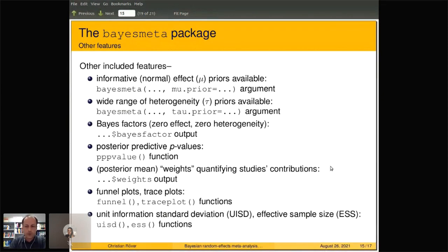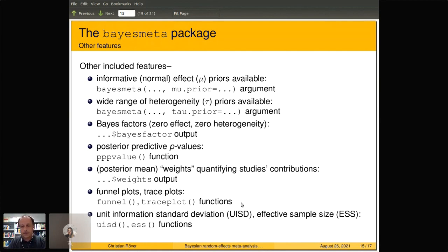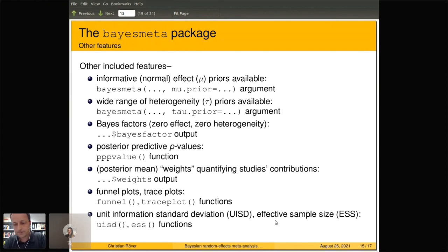It's often useful to quantify the influence individual estimates have on the overall outcome by giving weights to quantify the contribution of individual studies — that's included in the output. You can also produce additional plots like funnel plots or trace plots showing the behavior of the conditional mean and standard deviation of individual studies as you vary the heterogeneity. There are additional functions to figure out sensible prior distributions for the effect or heterogeneity, including unit information standard deviations and effective sample sizes — useful when performing a meta-analysis to use as a prior in a future meta-analysis.